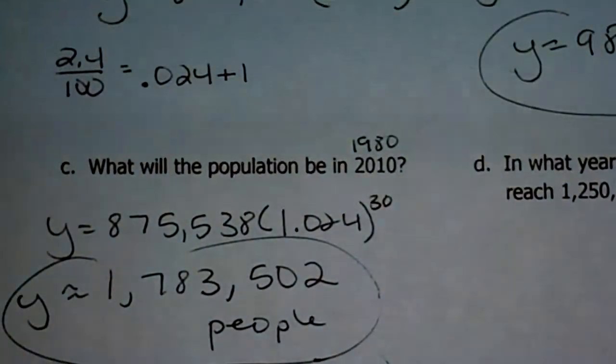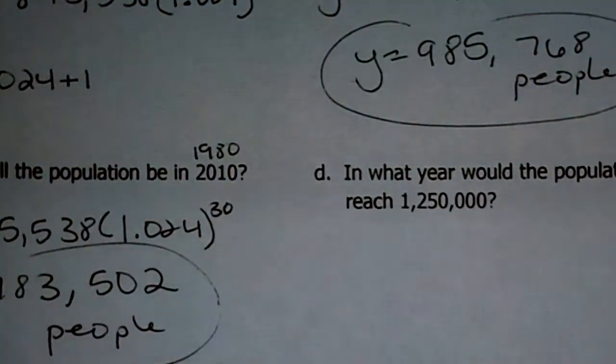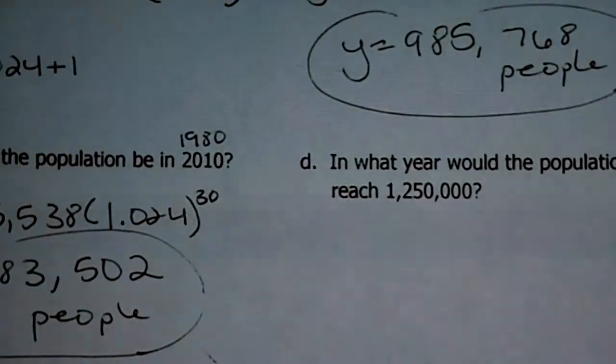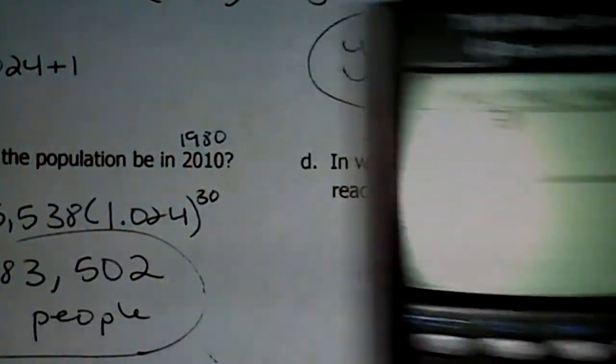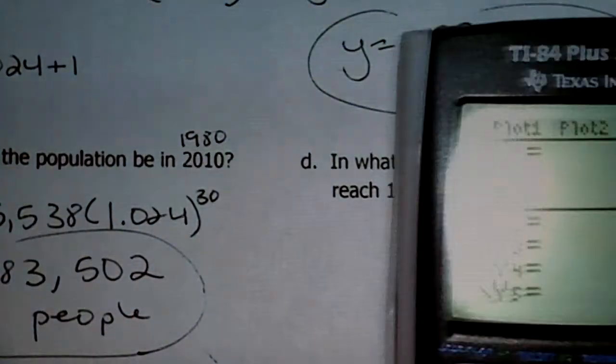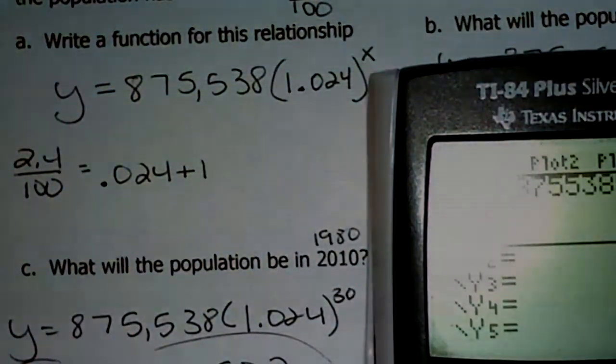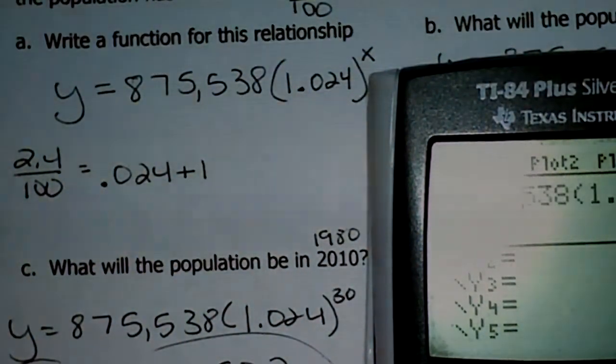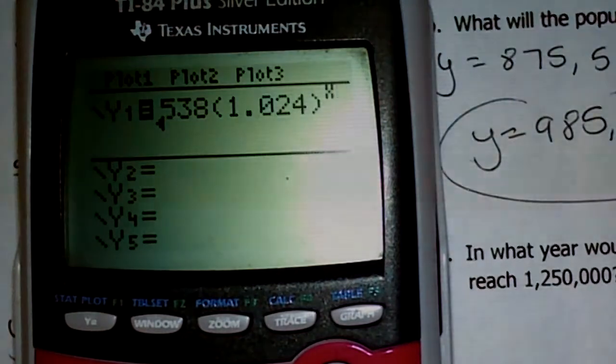Okay, then I ask you kind of a tricky one. I ask you, in what year would the population reach 1,250,000? Now, there's a couple different ways to do this, but quite honestly, I think your calculator is going to be the best way to do this one. Okay. Remember, you can type in any function, right? So get your calculator, go to y equals, get rid of any old ones you have in there, and you're going to type in your little parent equation here. Type this in using y and x as letters, so type in 875,538 times the quantity of 1.024 to the x power. Okay. Now, I'm not going to use the graph feature. I'm going to use the table feature right now. So go to your table, and I asked you in which year the population would reach 1,250,000.